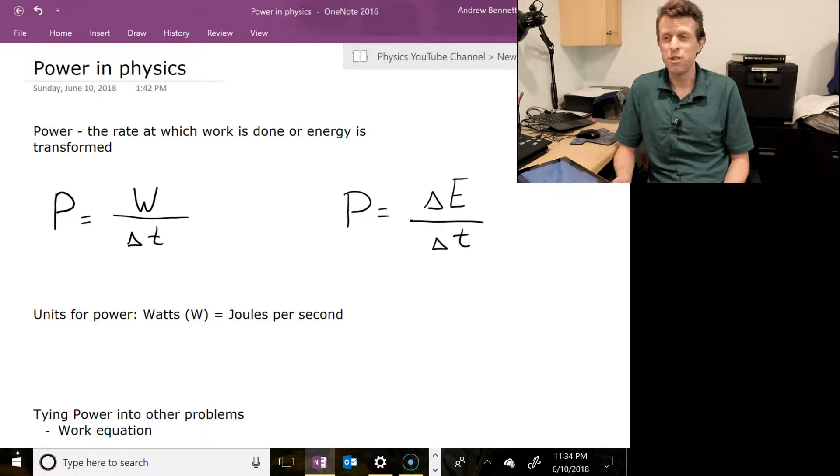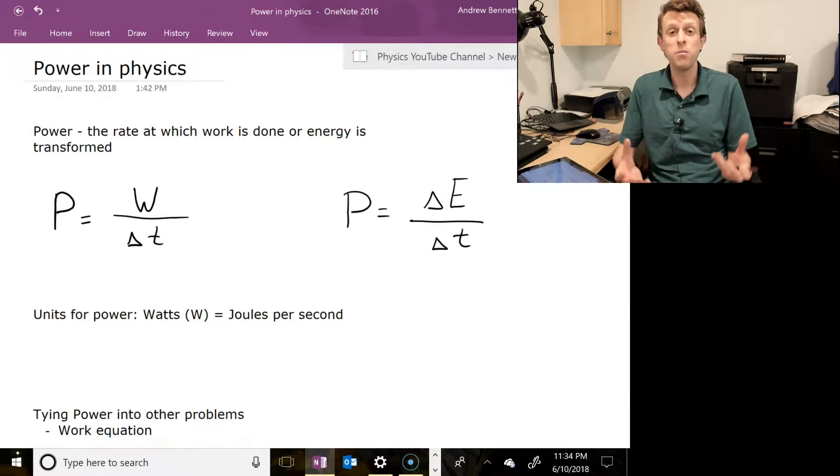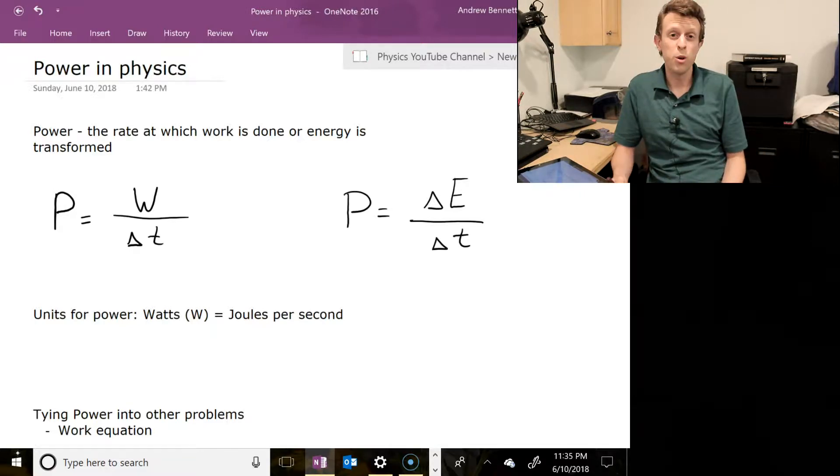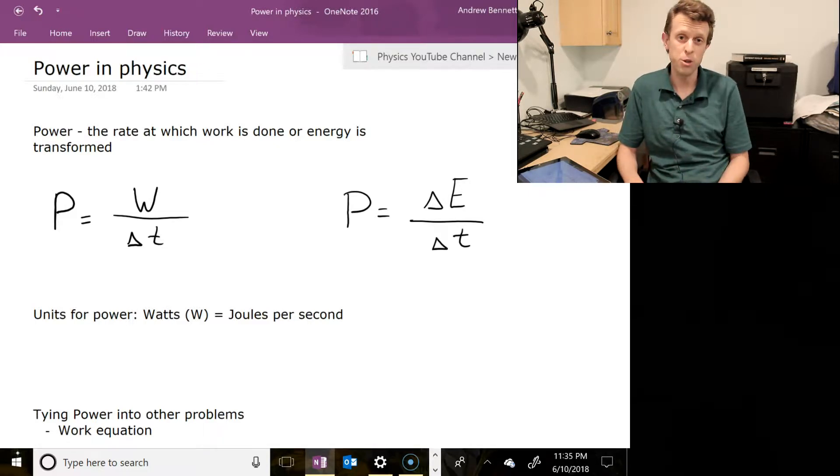For example, if I were to lift up a 100-pound rock one meter, we could say that I did a certain amount of work on that rock, and if I did it quickly versus if I did it slowly, the work wouldn't change at all. The work would be the same amount in each case, but the power would be different because power describes the rate at which work is being done.